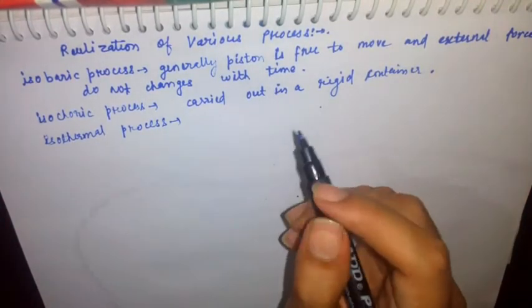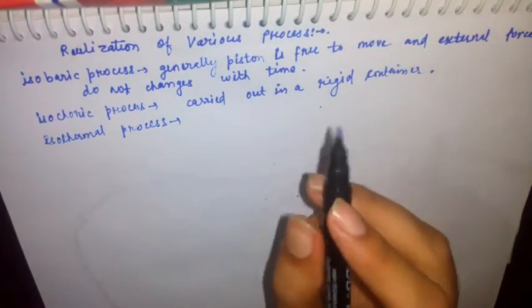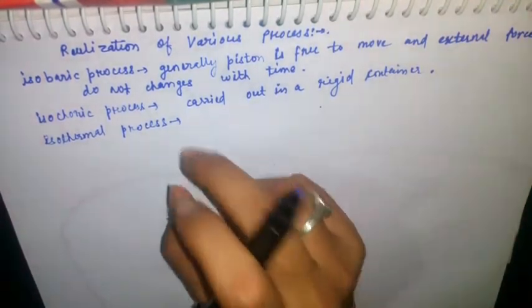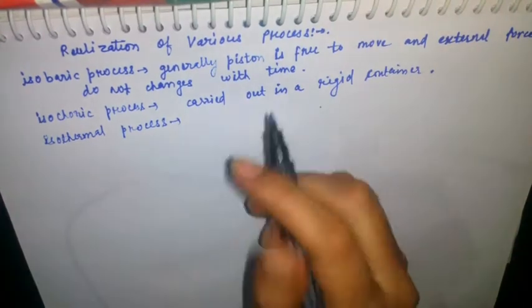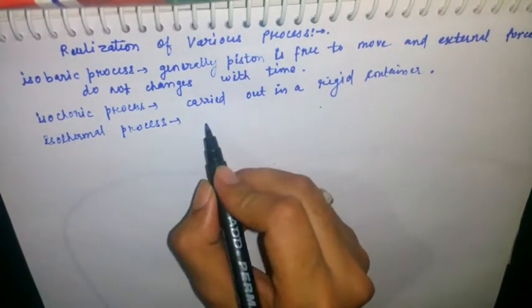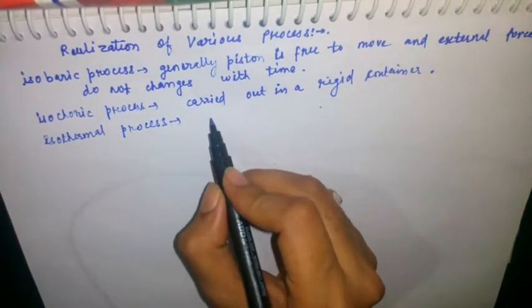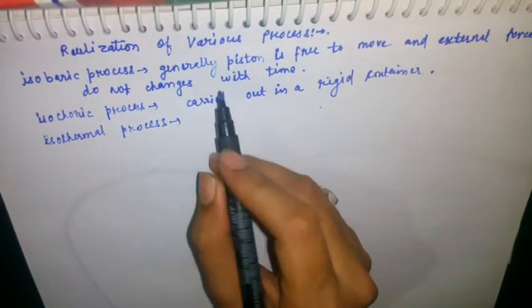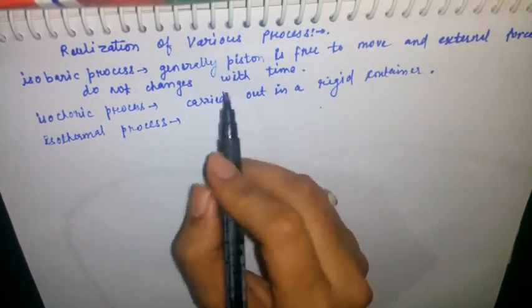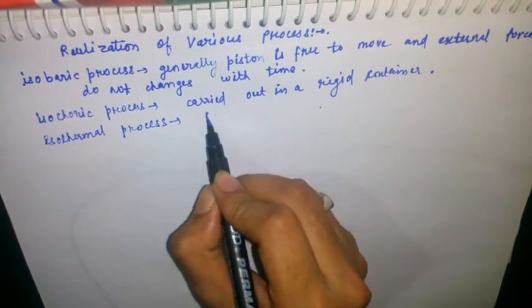Now we talk about the isothermal process. For the isothermal process, there are two types depending on the substance involved.